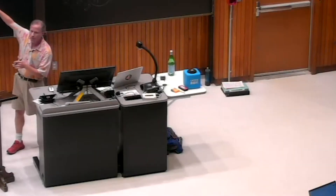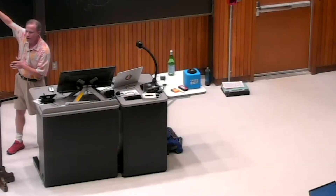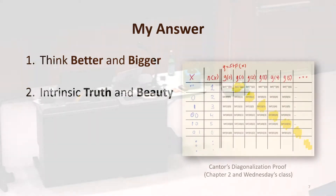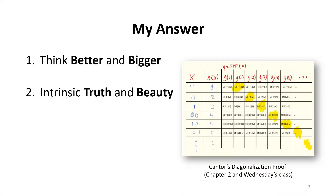One example of that — which we won't talk about today but is in chapter two of the book and we'll cover next week — is the proof from Cantor using diagonalization.